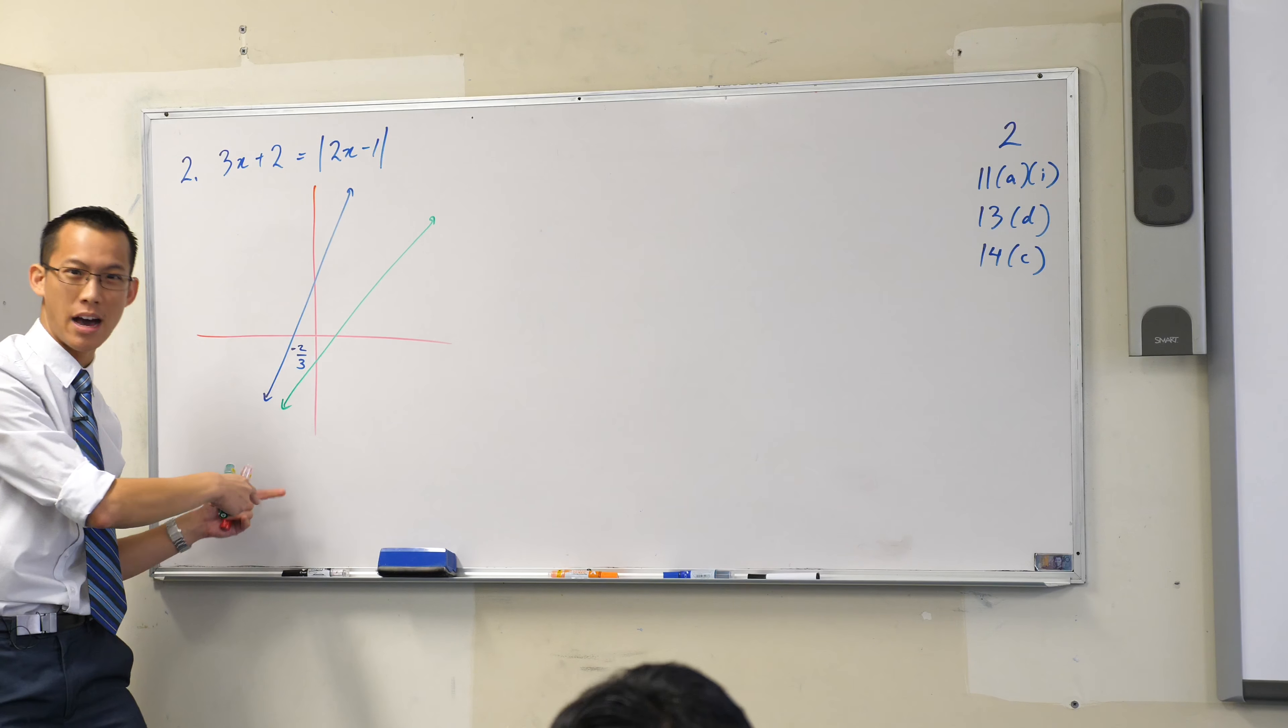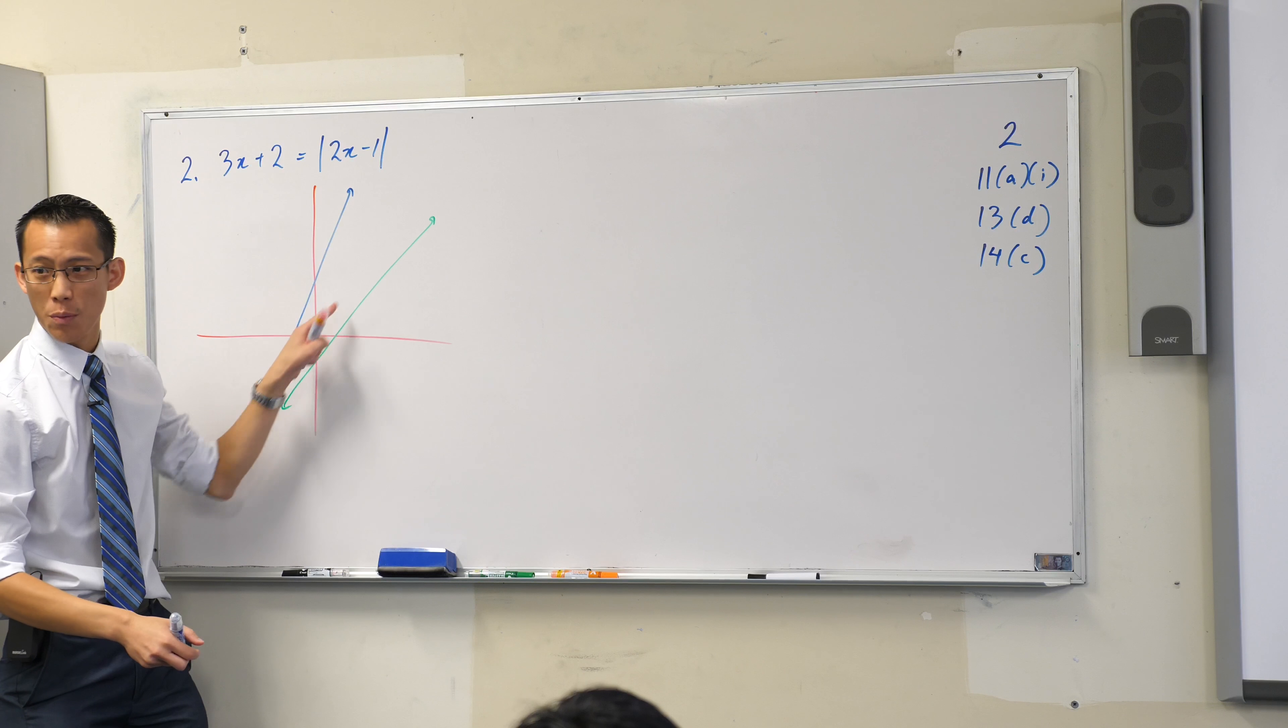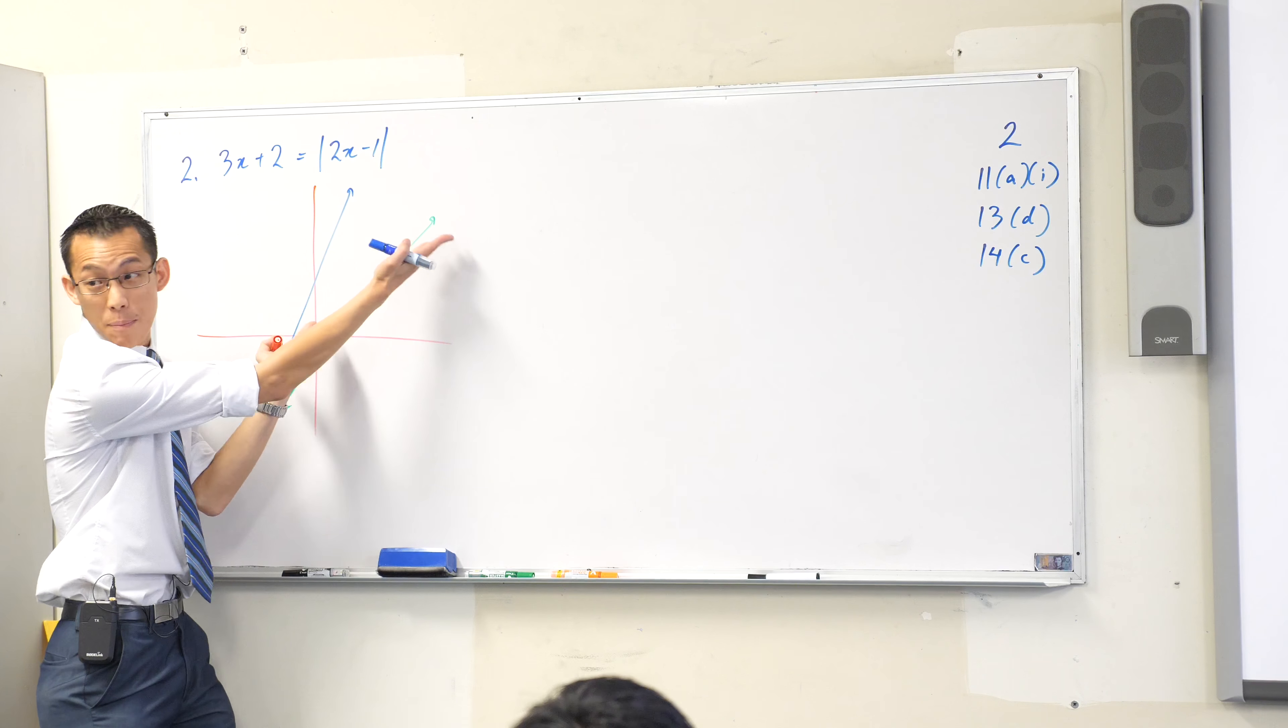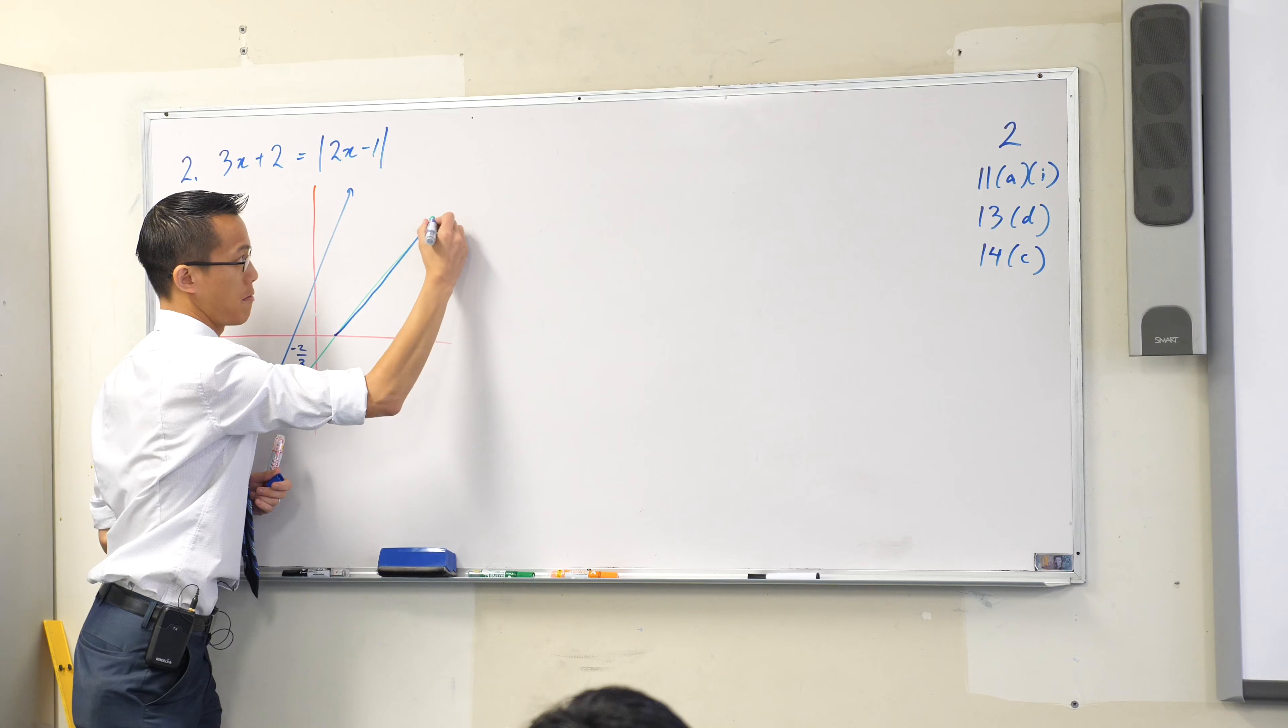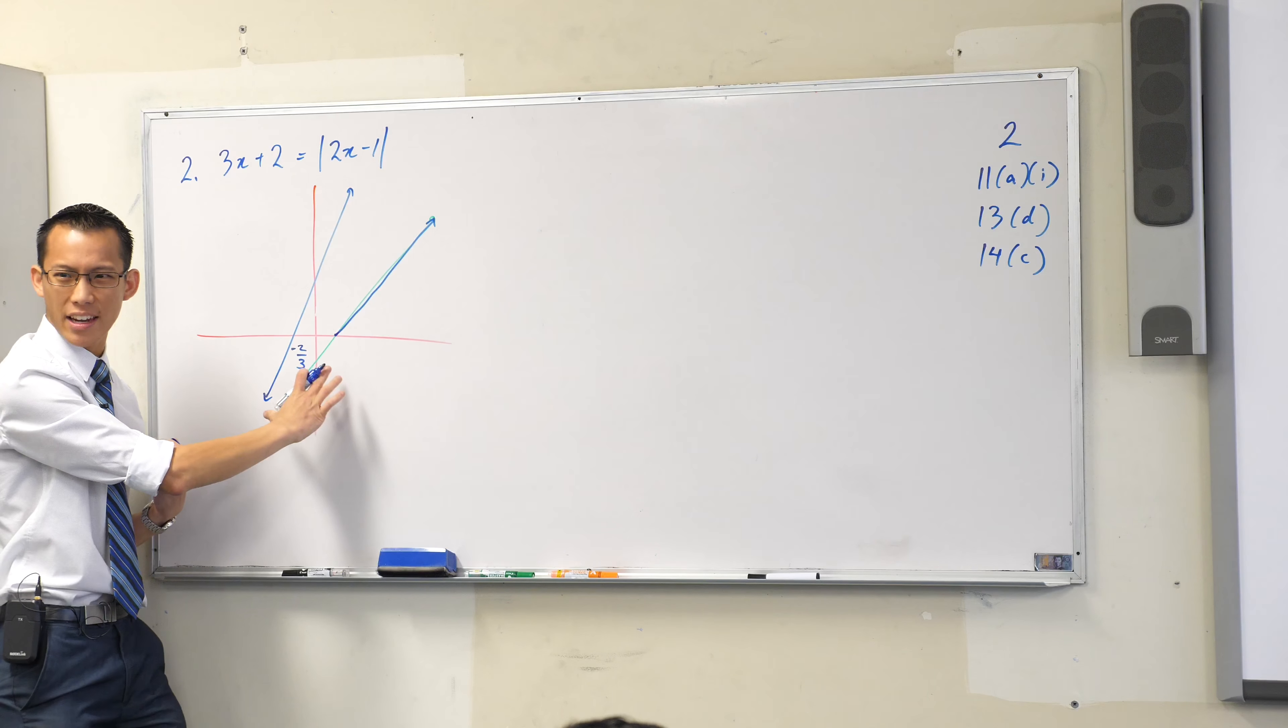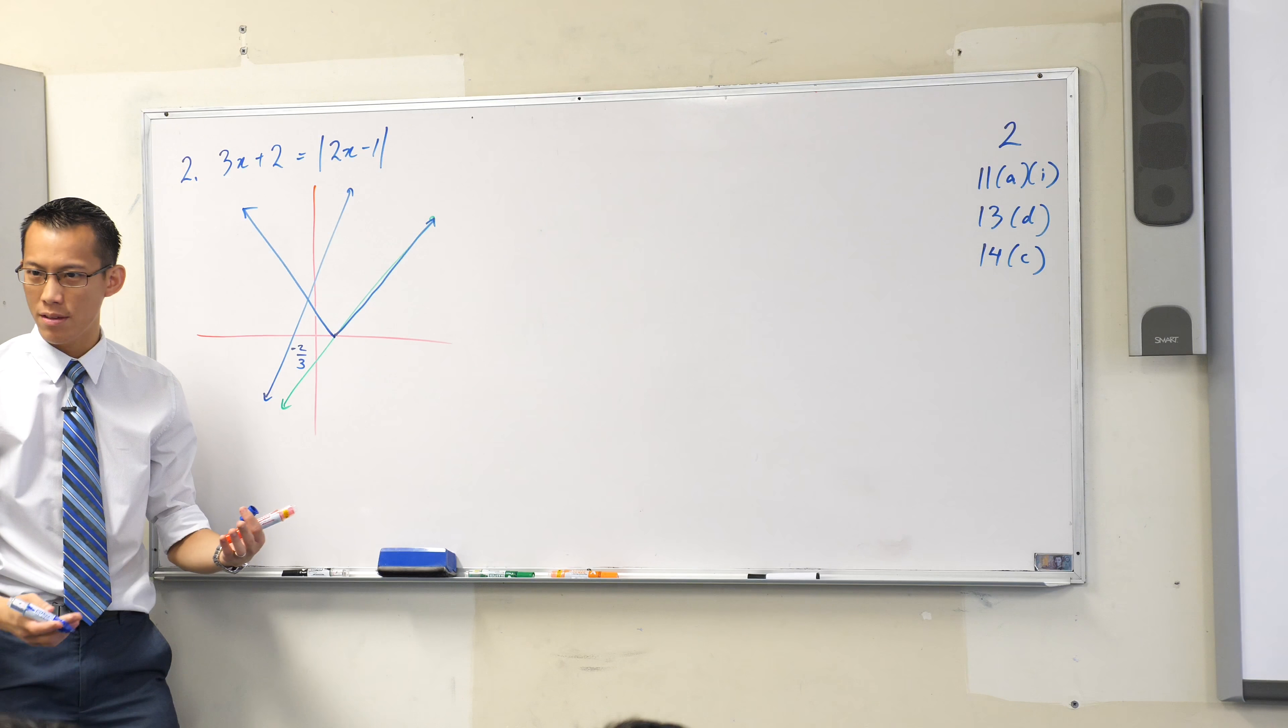But I don't have 2x minus 1, I have the absolute value of 2x minus 1. So what happens to this part over here when you apply an absolute value to it? Nothing happens to this section over here. Do you agree? Because it's positive, the absolute value of something positive is still positive. But then when you've got this section down here which is negative, the absolute value of this is going to reflect upwards, like so. Are you happy with that?